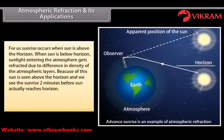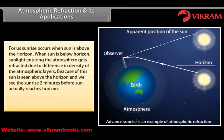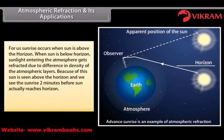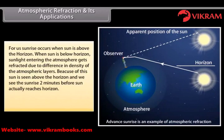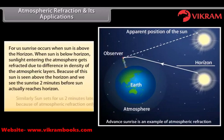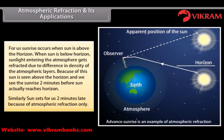For us, sunrise occurs when the sun is above the horizon. When the sun is below the horizon, sunlight entering the atmosphere gets refracted due to differences in density of the atmospheric layers. Because of this, the sun is seen above the horizon and we see the sunrise two minutes before the sun actually reaches the horizon. Similarly, the sun sets for us two minutes late because of atmospheric refraction.